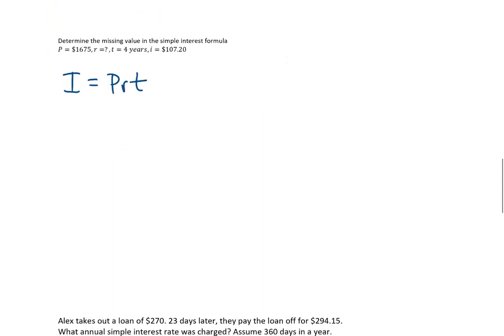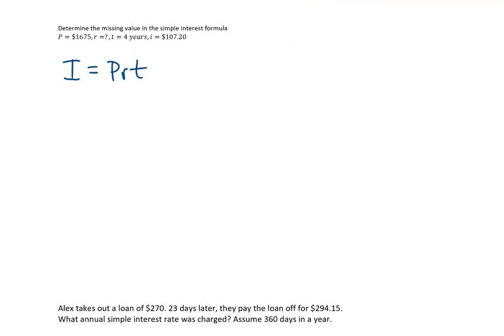We're going to be using the simple interest formula, but this time we're determining the missing value. We're given that P is 1,675. We don't know what R is. We're given that T is four years, and we're given that I is $107.20. Our goal is to solve for R.